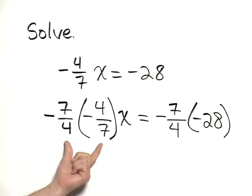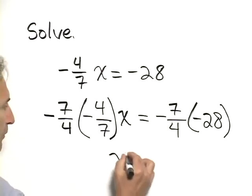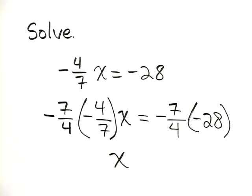On the left hand side, we're multiplying a number times its reciprocal, and a number times its reciprocal is 1, so therefore we have x on the left hand side.